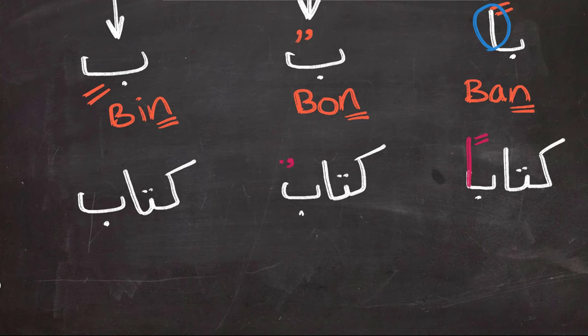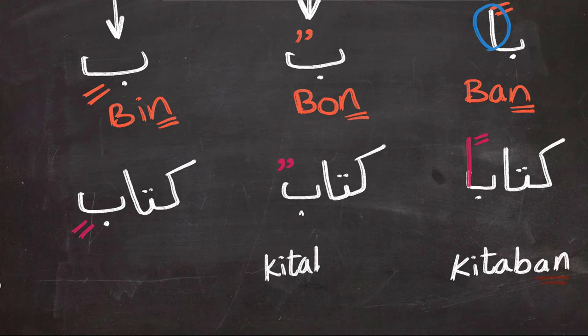For Tanween Dhamma and Kasra, we can just add them at the end of the word. So Kitab becomes Kitaban, Kitabun, and Kitabin.